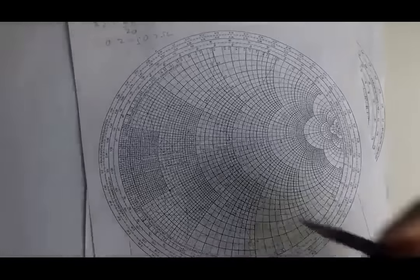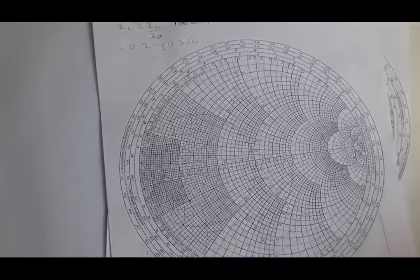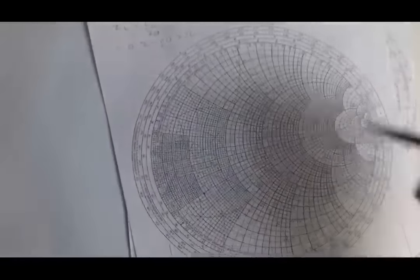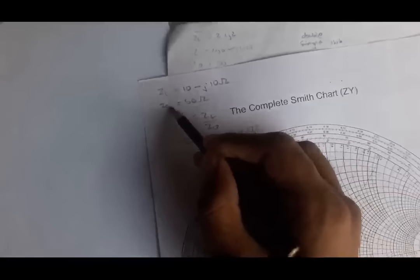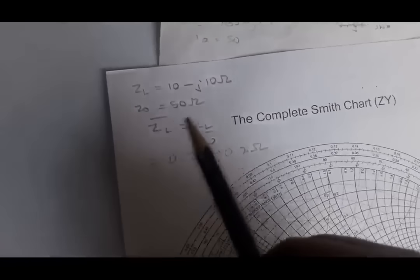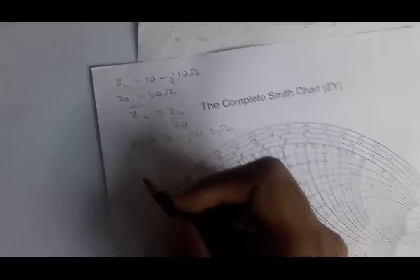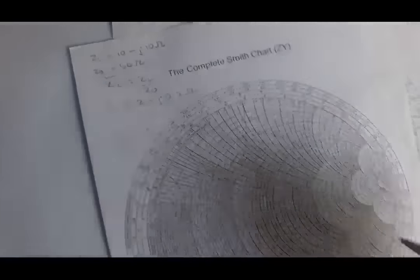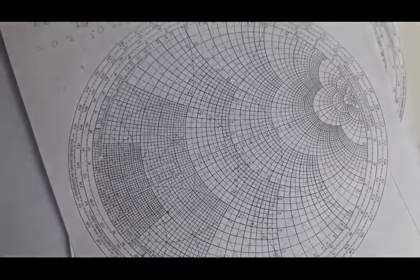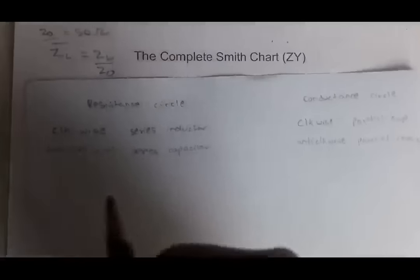Next, I connect this point to the center of the Smith chart. The center corresponds to Z0, because everything is normalized by dividing by Z0. So Z0/Z0 = 1, meaning the center point always represents the matched impedance Z0.